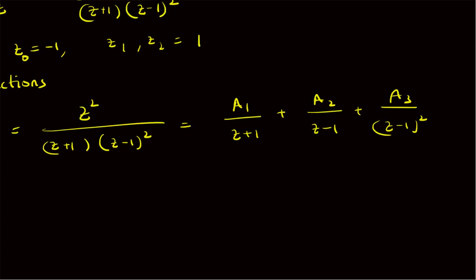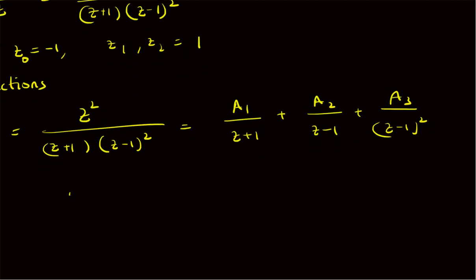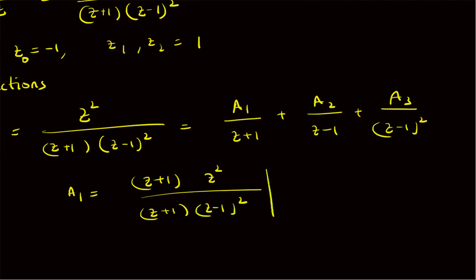We use the standard method to find the coefficients. A₁ is given by (z+1) × X(z)/z = z² / [(z+1)(z-1)²], evaluated at z = -1. The (z+1) terms cancel, giving z² = 1 and (z-1)² = (-2)² = 4. So A₁ = 1/4.